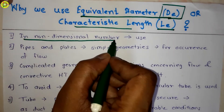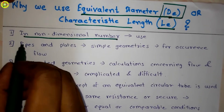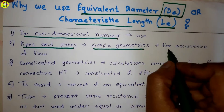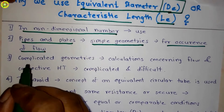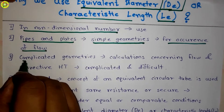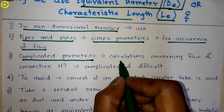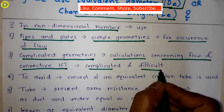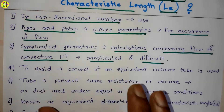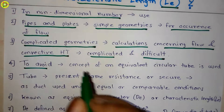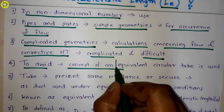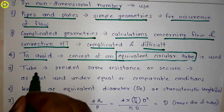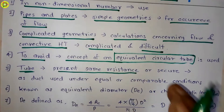This equivalent diameter or characteristic length we use in non-dimensional numbers. Pipes and plates are simple geometries, so occurrence of flow is easy. In some cases we use complicated geometries where calculations concerning flow and convective heat transfer become complicated and difficult. To avoid these complications and difficulties, we use the concept of an equivalent circular tube.